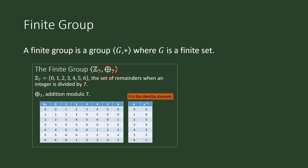It is always possible to produce a table for a finite group, although sometimes it is convenient to do so and sometimes it is not. It is convenient when your table will fit the page of your paper or your screen. To interpret this table, we begin with the elements in the first column, pair them with the elements in the first row, and then apply our operation, which is addition modulo 7.